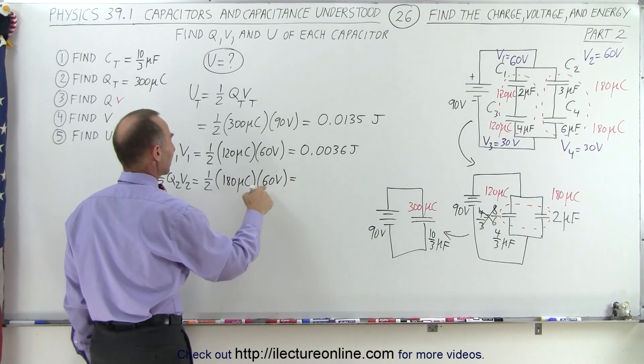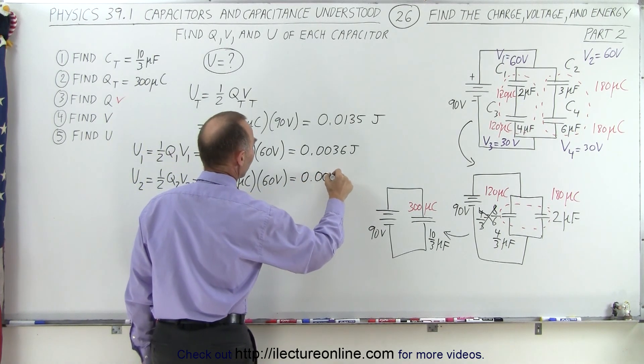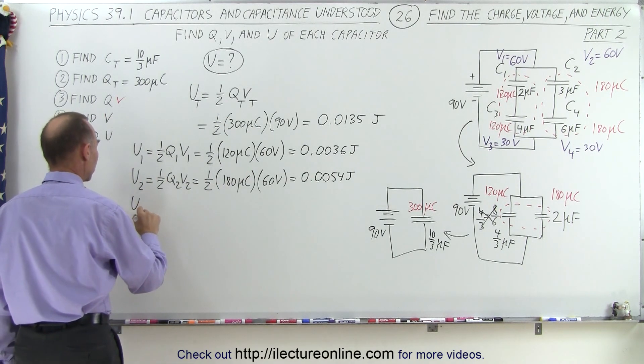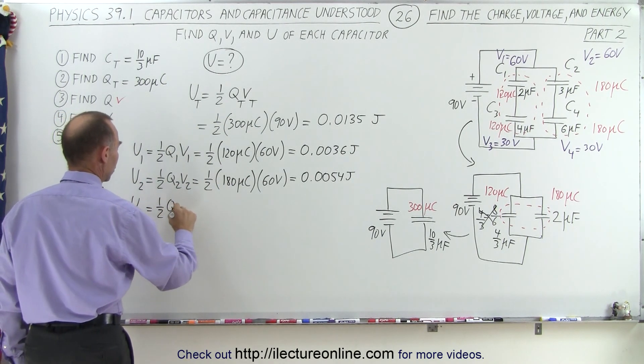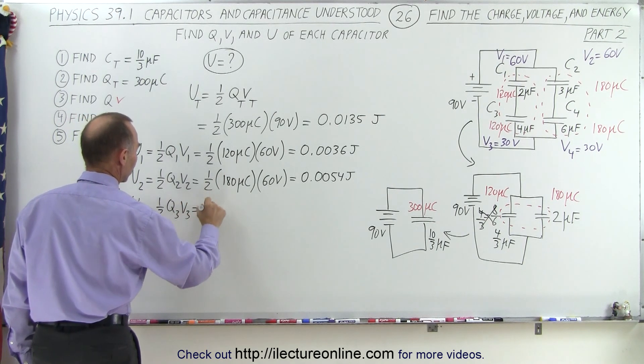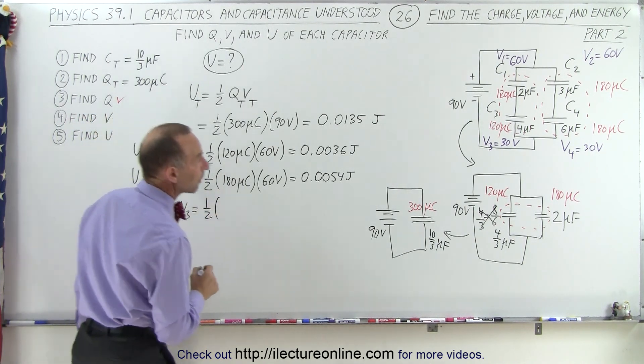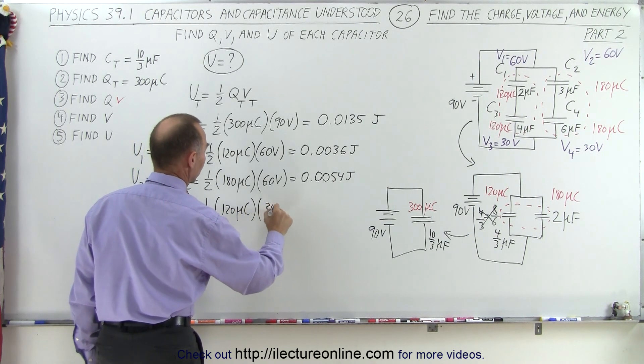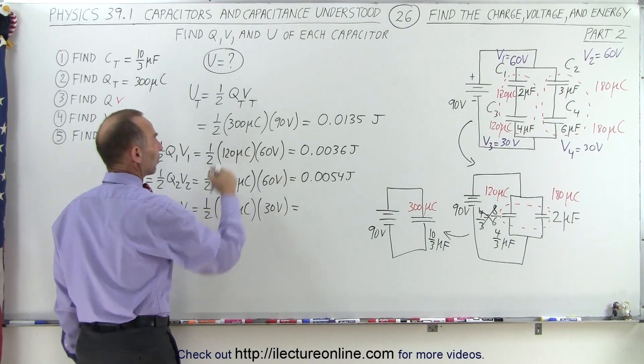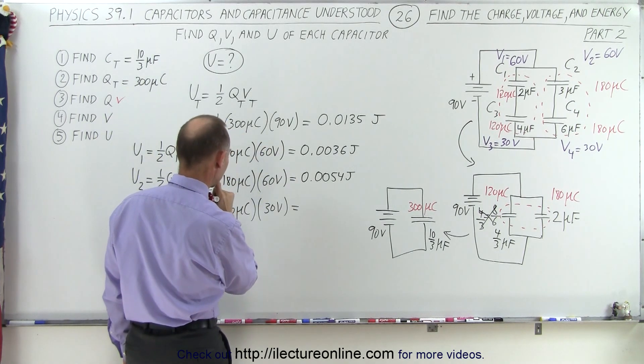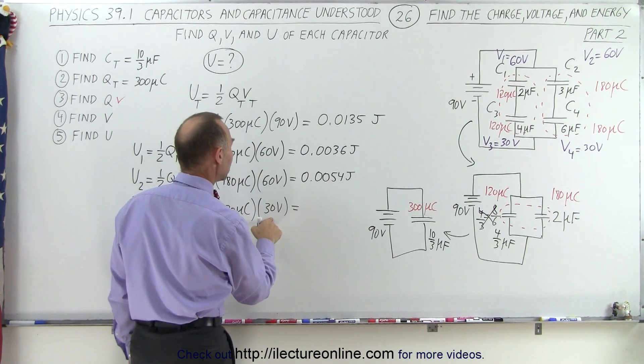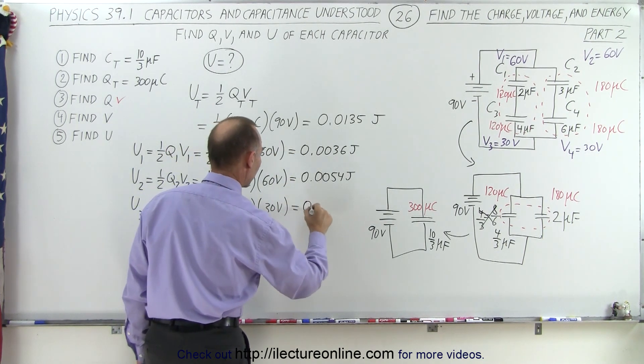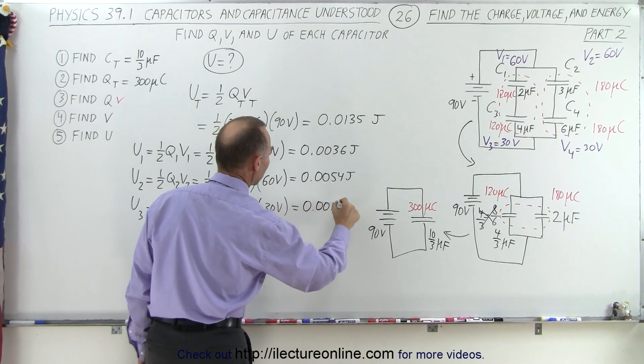And so that would be 9 times that, 0.0054 joules. The energy on the third capacitor is one-half Q3V3, which is one-half times 120 microcoulombs times 30 volts. That would be half of what we had over there... not quite half because it's different in voltage. So that would be 0.0018 joules.